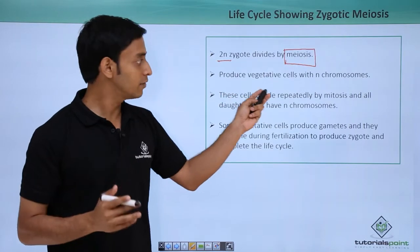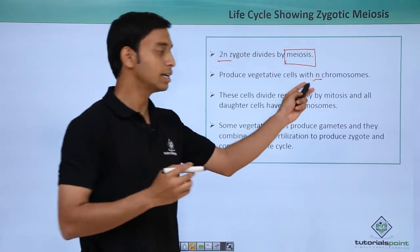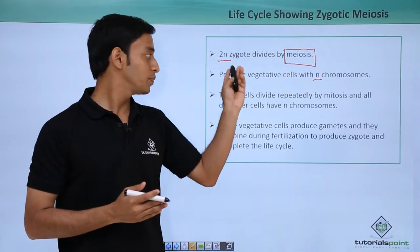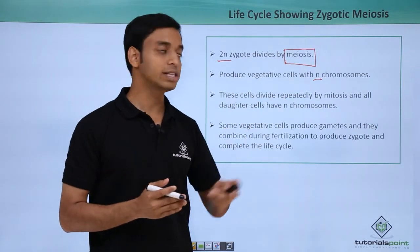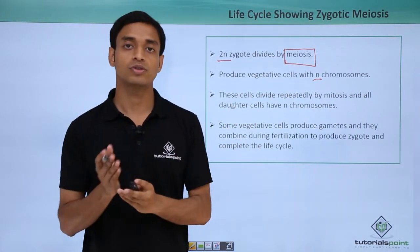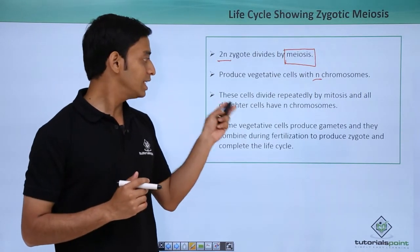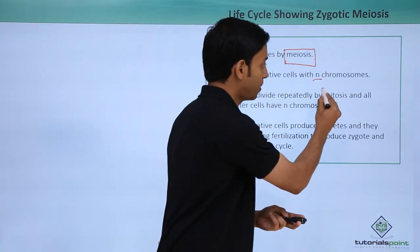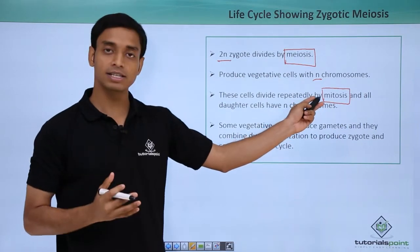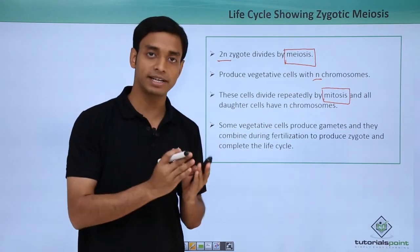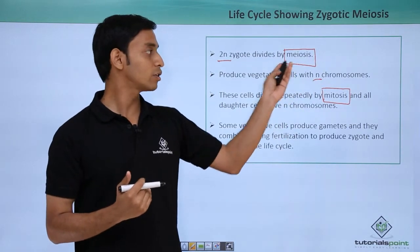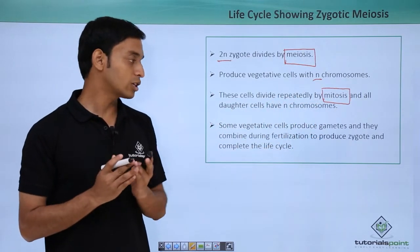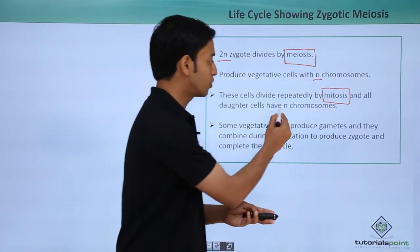It will produce vegetative cells with N number of chromosomes. Because it is performing meiosis and initially it was 2N, it is now going to produce vegetative cells which will have N number of chromosomes. Now these cells which are produced will divide repeatedly via mitosis. Mitosis is different from meiosis because in mitosis the number of chromosomes is maintained and not halved. So dividing via mitosis, all the daughter cells which are formed will have N number of chromosomes.